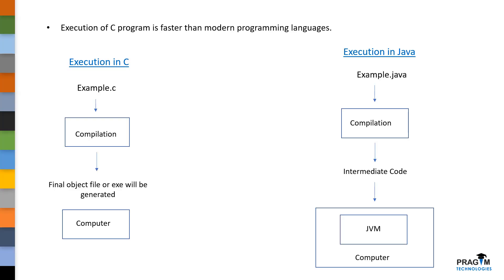Execution of C program is a bit faster when compared to modern programming languages. That is, when we write a C program and compile it, after the compilation process, a final executable file will be generated. Whereas in modern programming languages such as Java and C#, intermediate code will be generated. In case of Java, we need to install another program called JVM. The responsibility of this JVM is to translate the intermediate code to the final code, which in turn will reduce the execution speed of the program.